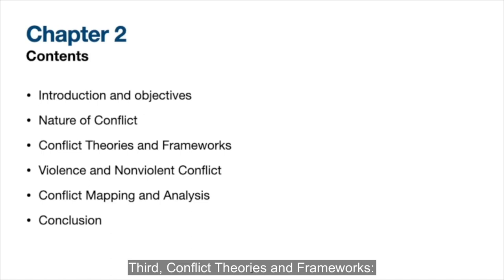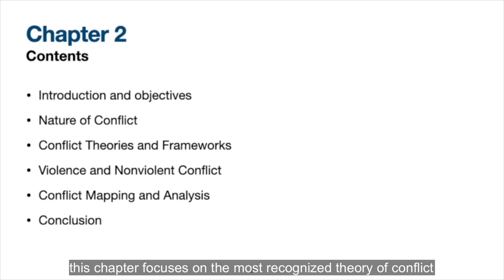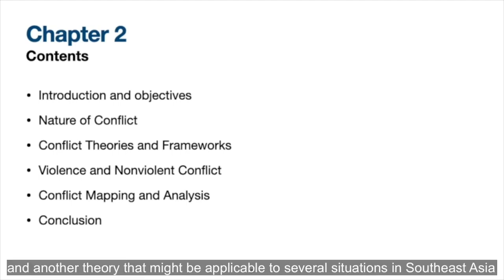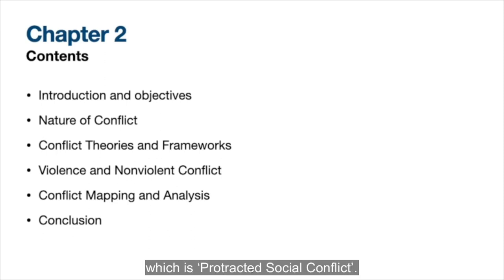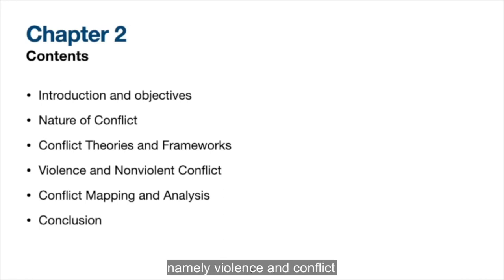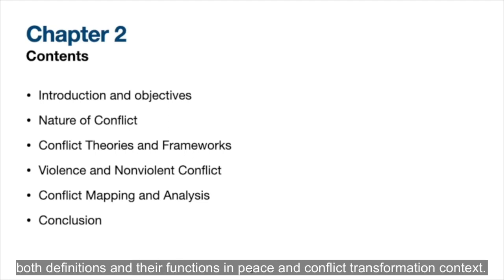Third, Conflict Theories and Frameworks. Since there are a number of theories of conflict, this chapter focuses on the most recognized theory — the Conflict Triangle — and another theory applicable to several situations in Southeast Asia, which is Protracted Social Conflict. Fourth, Violence and Non-violence Conflict. The discussion regarding peace always involves violence and conflict, requiring definitions and their functions in peace and conflict transformation contexts.